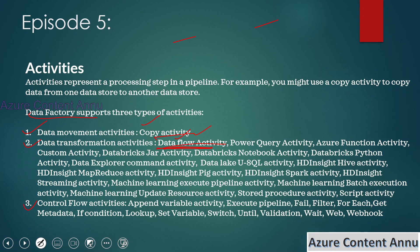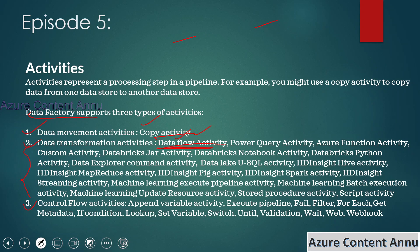For data transformation activities, we have many activities that help transform data as per the requirement. Some are used to deal with big data technologies — for example, HDInsight, Hive activity, and MapReduce. You can also work with Spark technology using Databricks notebooks or HDInsight Spark activity. There are many activities and we will learn a few of them in detail later.